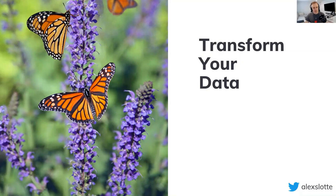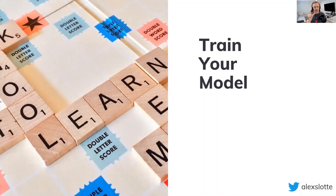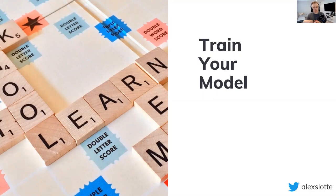Once your data is in a good place, training your model will essentially be one line of code. In this step you pick your algorithm and get going with the training process. Don't be afraid of this step - most algorithms are categorized underneath a specific ML task. Data scientists don't always pick the right algorithm from the start; they try five or ten of them, measure accuracy, and understand which one is best based on the data.